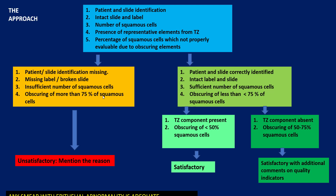Depending on what you find, the rest of the algorithm proceeds. If any of the factors shown in orange are present, the slide immediately becomes unsatisfactory. If patient or slide identification is missing, or there is a missing label or broken slide, you cannot evaluate the slide and it immediately becomes unsatisfactory. If identification is okay but the number of squamous cells is insufficient, or 75% or more of the squamous cells are obscured, the smear immediately becomes unsatisfactory.